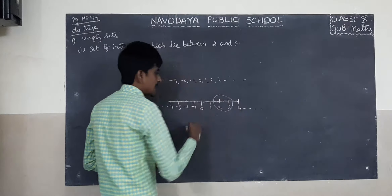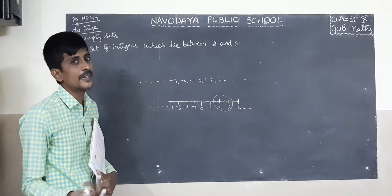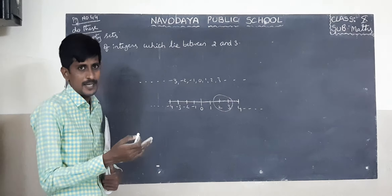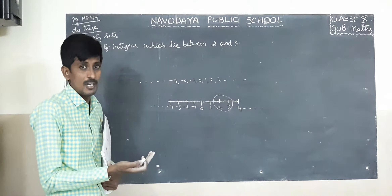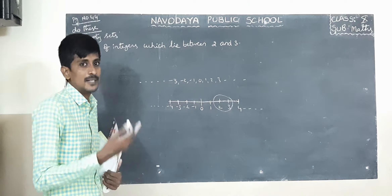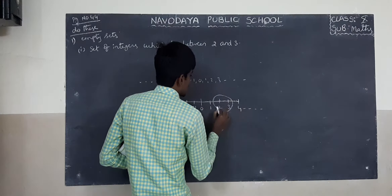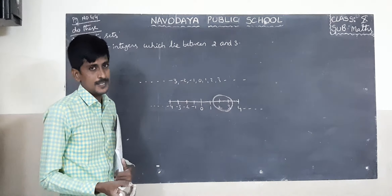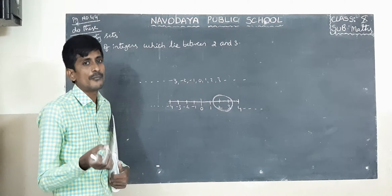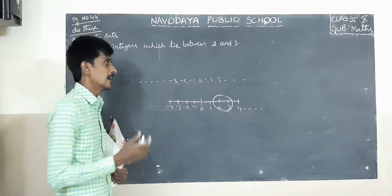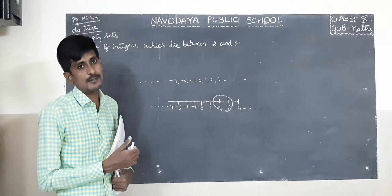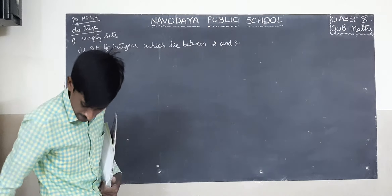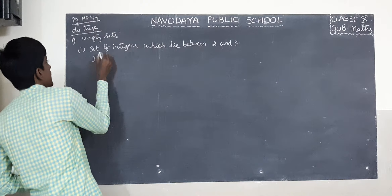In between 2 and 3, what are the integers? There are no integers in between 2 and 3. In between any two consecutive numbers, we can write infinite rational numbers, but there are no integers, no whole numbers, no natural numbers in between any two consecutive numbers. So it is an empty set.